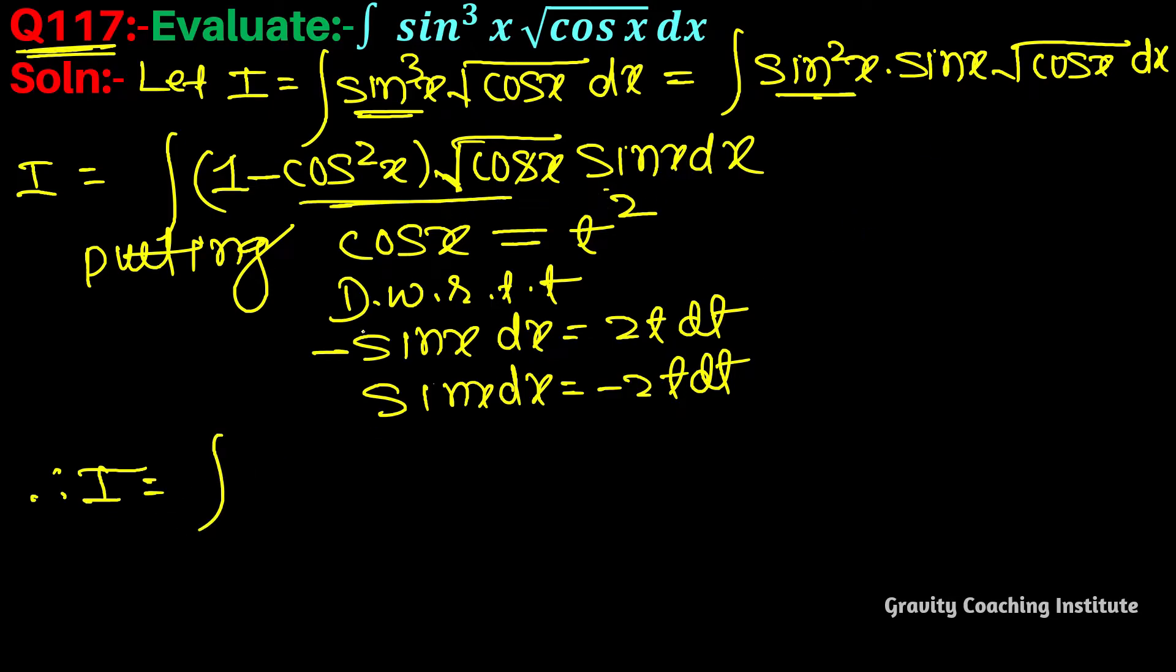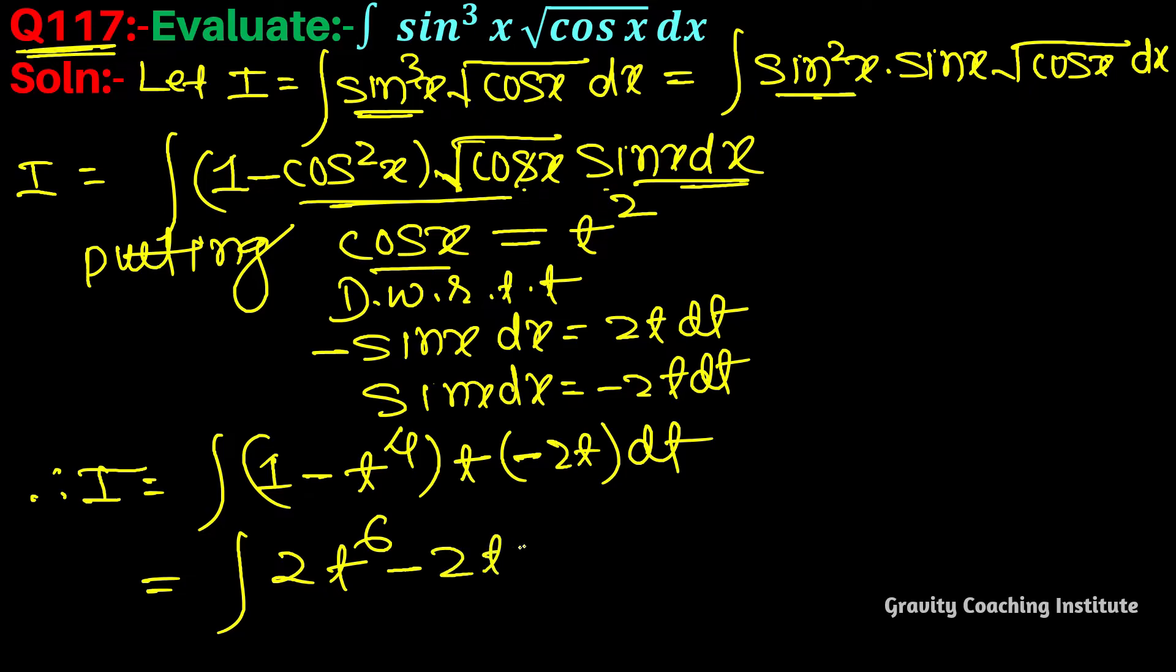Now substituting into the integral, this becomes integration of (1 - t⁴) into t into minus 2t² dt, which simplifies to 2 into integration t⁶ dt minus 2 into integration t² dt.